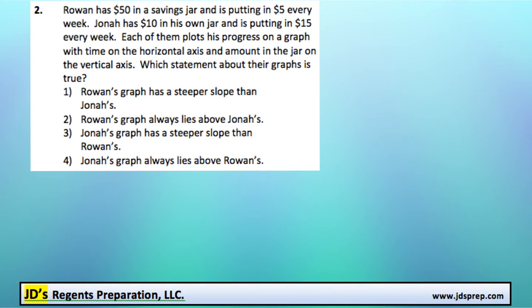This is problem number two from the August 2015 Algebra Regents exam. Rowan has $50 in his savings jar and is putting in $5 every week. And Jonah has $10 in his jar and is putting in $15 every week.